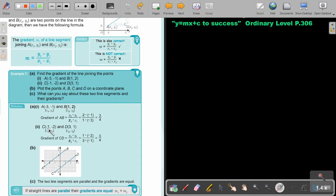And then C, D do exactly the same. Again, three quarters. Now we're going to plot the points A, B, C, D. So what can you tell about these two lines? The two lines are parallel and the gradients are equal. So this is very important. If straight lines are parallel, their gradients are equal. And we indicate it by saying M1 equals M2.